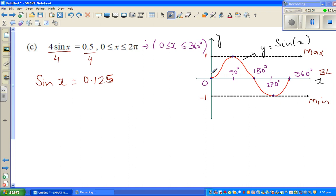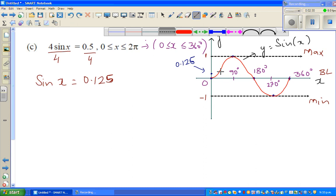Making a rough estimate, 0.125 probably comes here. So for which value of x is your sin x becoming 0.125? In other words, when y is 0.125, what's the value of x? That's the question.